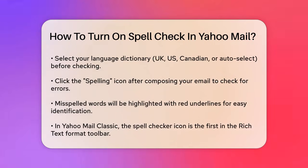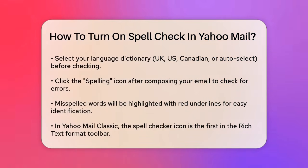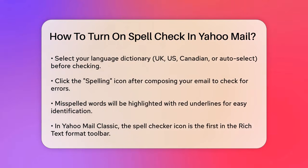Once you've finished writing your email, click on the spelling icon. Any spelling mistakes will be highlighted with red underlines. You can correct these manually or click on the word to get auto-suggestions from Yahoo.